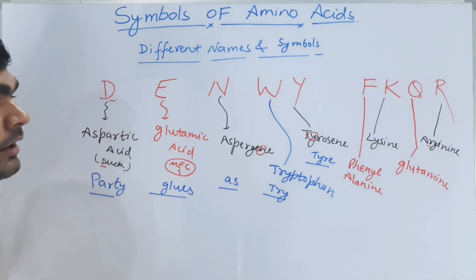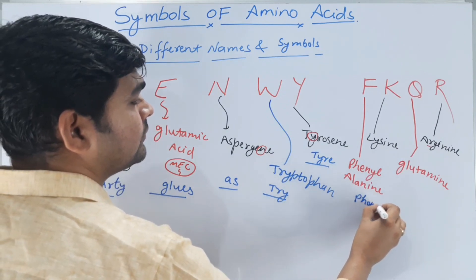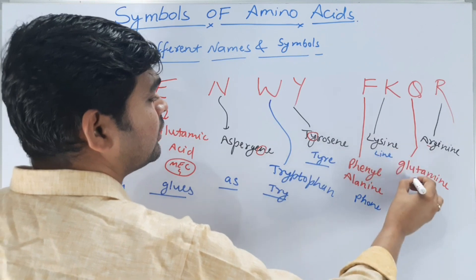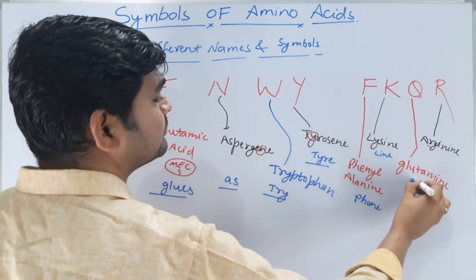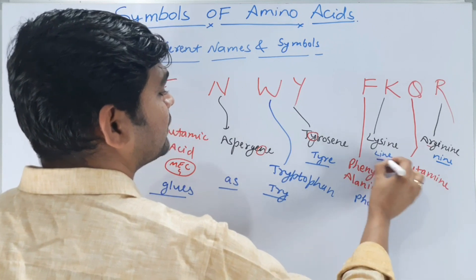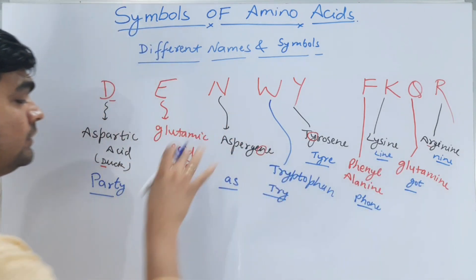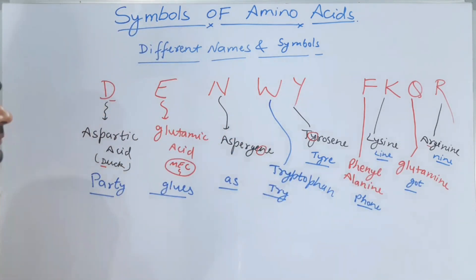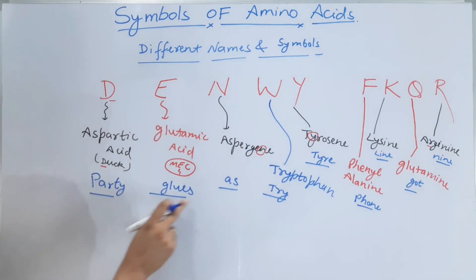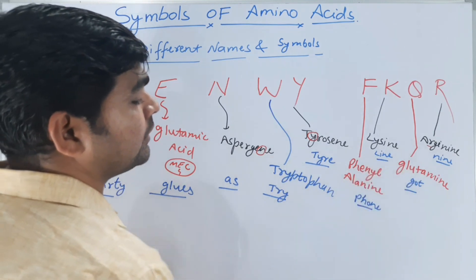The full mnemonic is: 'Party glues as tri-tier, phone line got nine.' Phone — line — got — nine. This is a very simple trick, very easy to remember all these different names. So we write: Denvi Fakir, then: party glues, as tri-tier, phone line got nine.